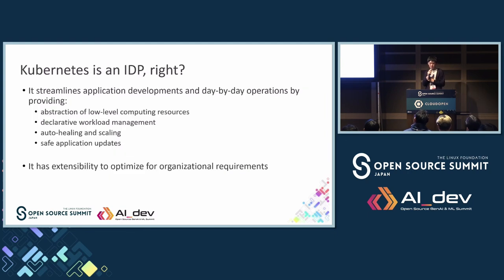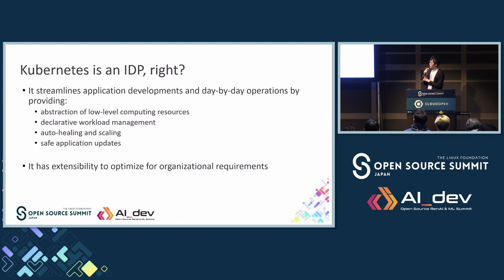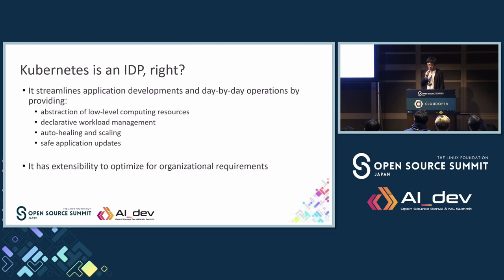You might think that Kubernetes can also be an IDP. In that sense, it reduces non-essential tasks in developing and operating applications. And in fact, Kubernetes can do that. For example, it abstracts underlying computing resources and applications can be managed declaratively using text files called manifests. It can also automate restarting, scaling, and updating applications. Furthermore, we can extend Kubernetes to meet our organizational-specific requirements.